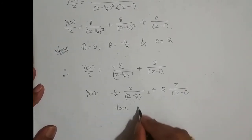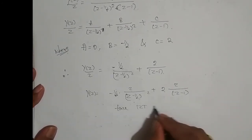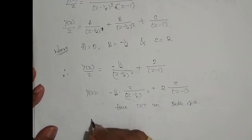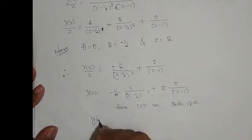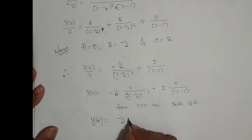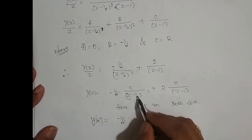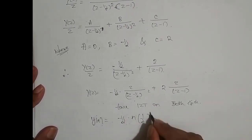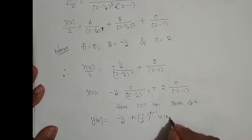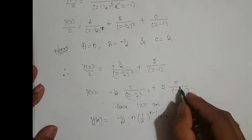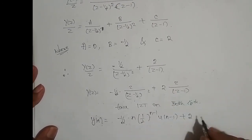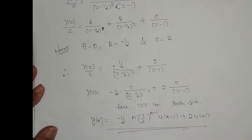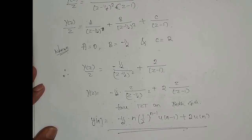Taking the inverse Z-transform on both sides, since it is a causal system: the inverse Z-transform of z/(z - 1/2)² is n·(1/2)^(n-1)·u(n-1), so the first term gives -1/2·n·(1/2)^(n-1)·u(n-1). The inverse Z-transform of z/(z - 1) is u(n), giving plus 2·u(n). This is the total response of the system.